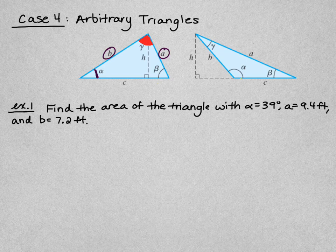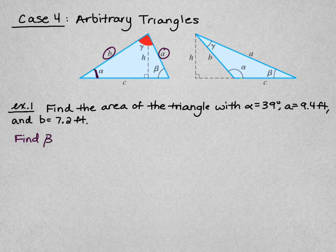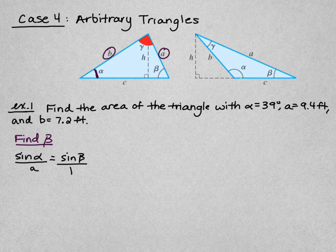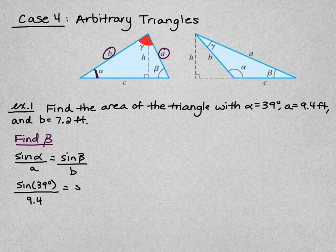To find gamma, we first need to use the Law of Sines. The Law of Sines requires an angle and its opposite side. We don't know anything about c, so we'll find beta first since we know b. From the Law of Sines: sine of alpha over a equals sine of beta over b. Substituting, we get sine of 39° over 9.4 equals sine of beta over 7.2.